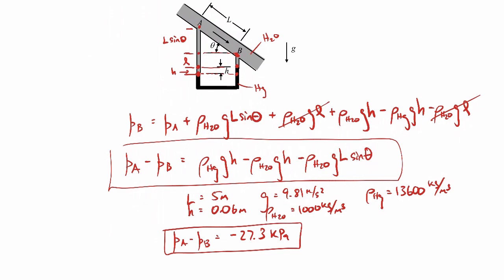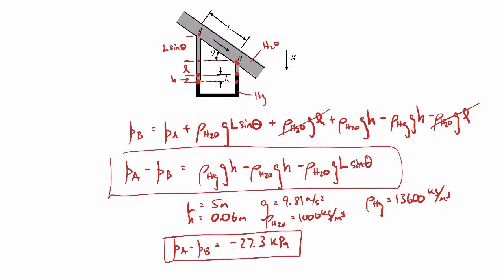We don't have to specify gauge or absolute because it's a pressure difference - it's the same pressure difference whether it's gauge pressure or absolute pressure. So the pressure at A is actually less than the pressure at B for this particular case. We'll go ahead and end the example there.